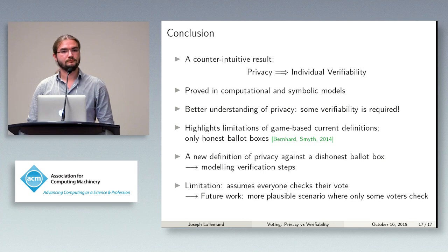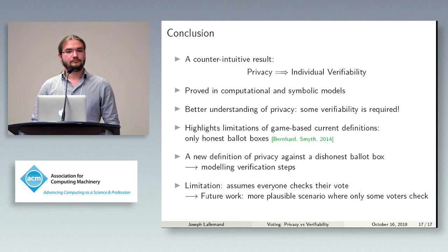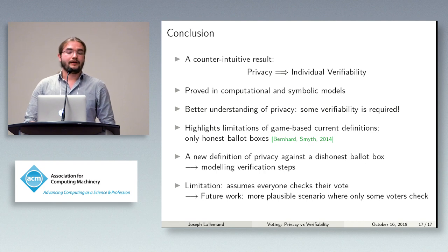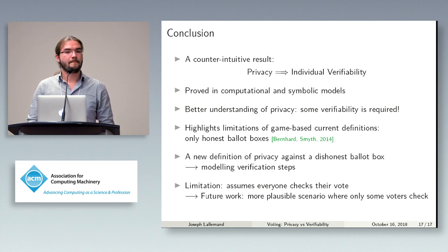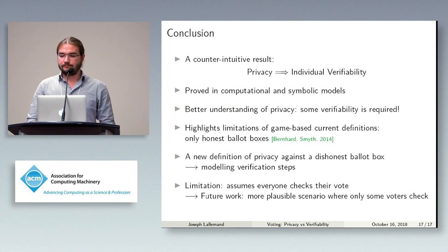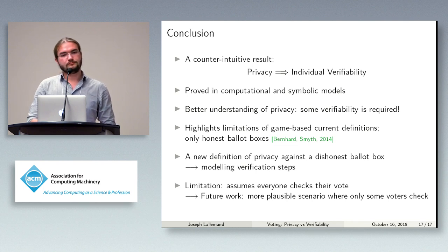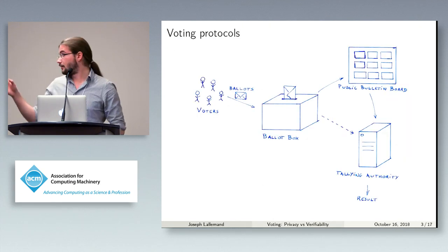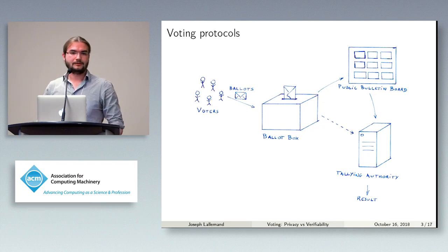Question: Do you have any thoughts about whether privacy against a dishonest ballot box is possible? It seems like the dishonest ballot box can always tally the votes without the last voter and then with the last voter to learn their vote. Response: You need some further assumption about the model. It's possible if everyone checks that their votes have been counted and have not been removed. But the ballot box cannot compute the tally — only the tallying authority can, because only the tallying authority has the secret key. Here we're assuming an honest tallying authority that does not cheat in that way.